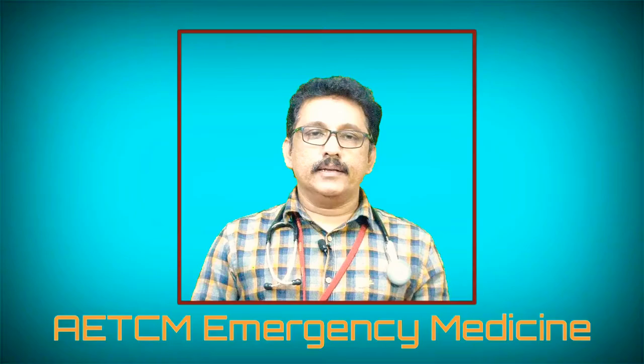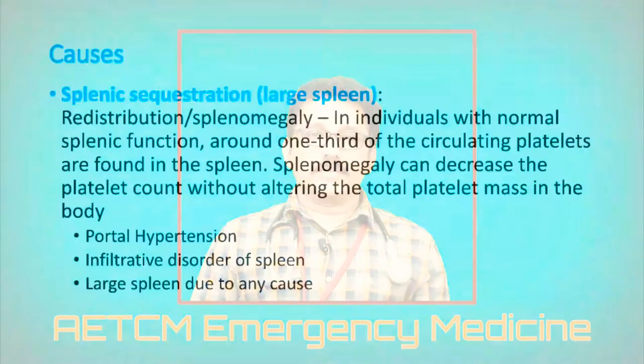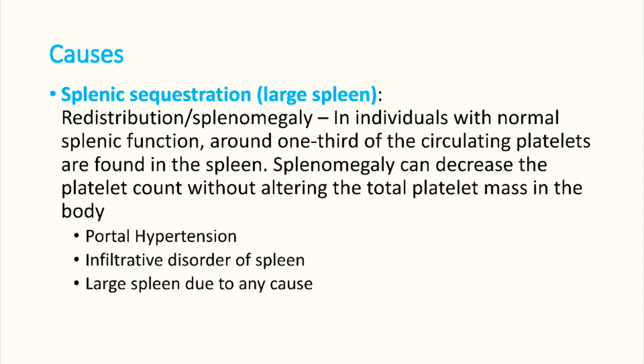The second major cause is splenic sequestration. Normally, 30% of platelets are destroyed in a normal spleen. But when the spleen enlarges — in conditions like malaria, hemolytic anemia, portal hypertension, splenic infiltration, or leukemia — there is increased destruction of platelets, leading to thrombocytopenia.